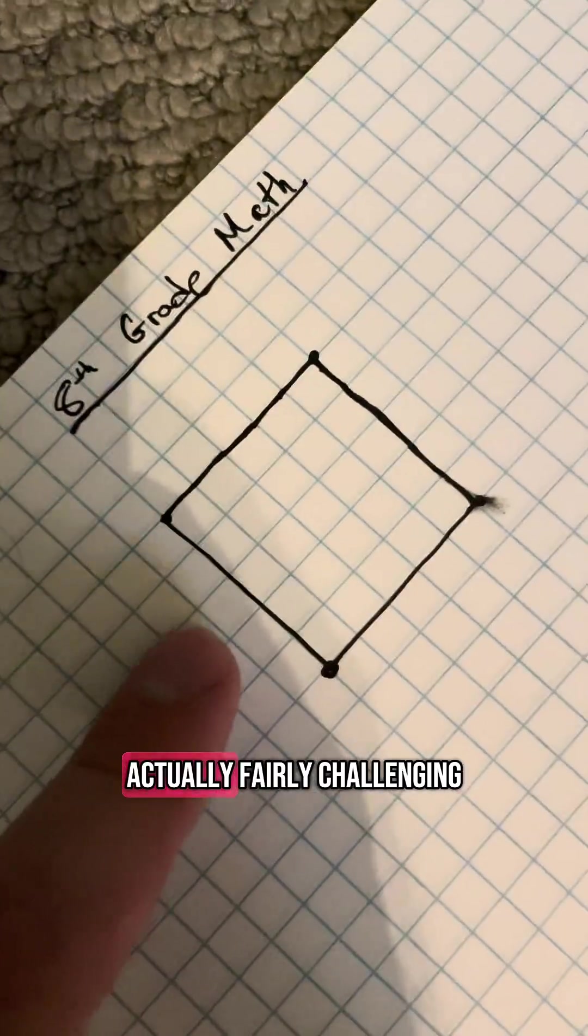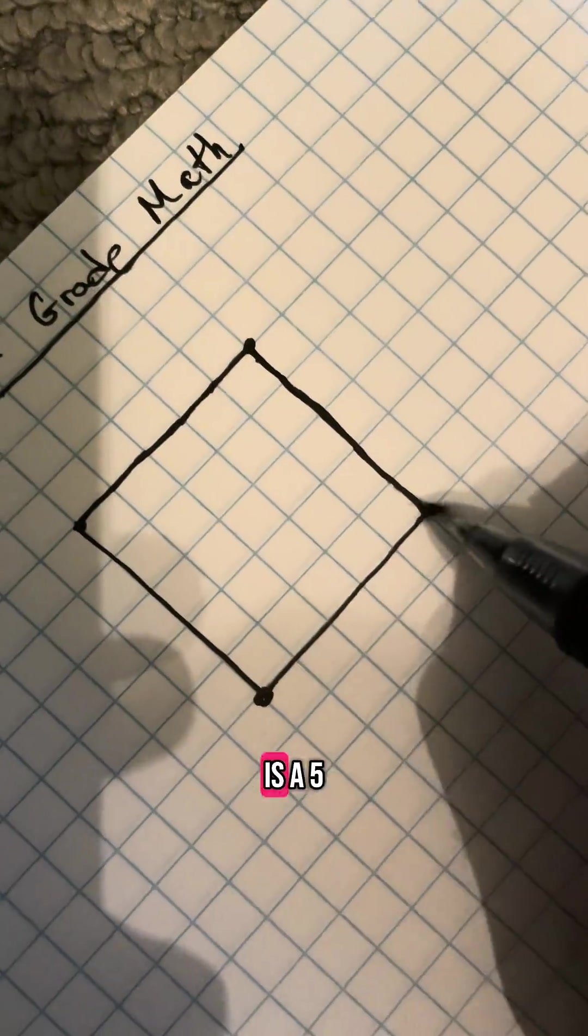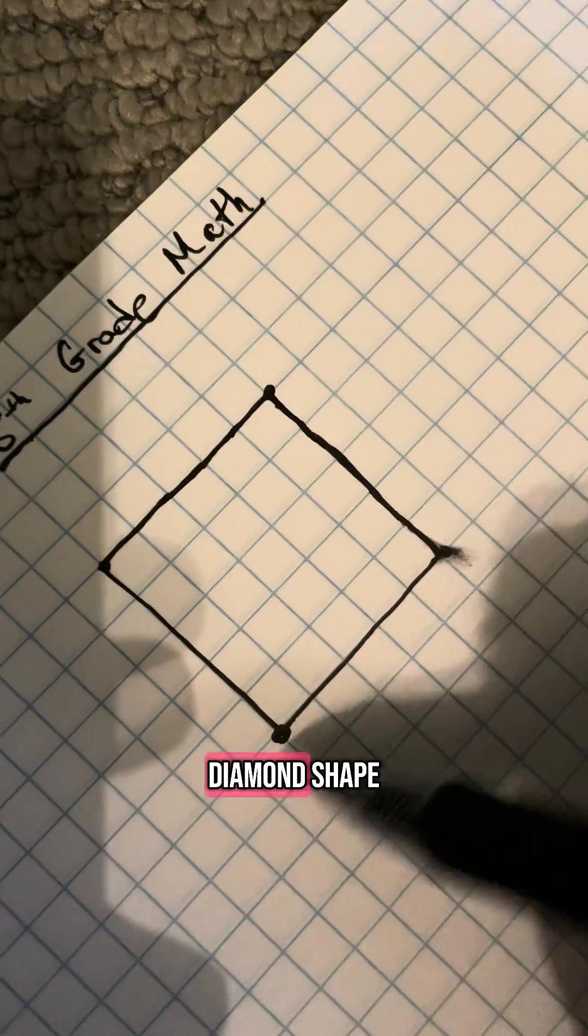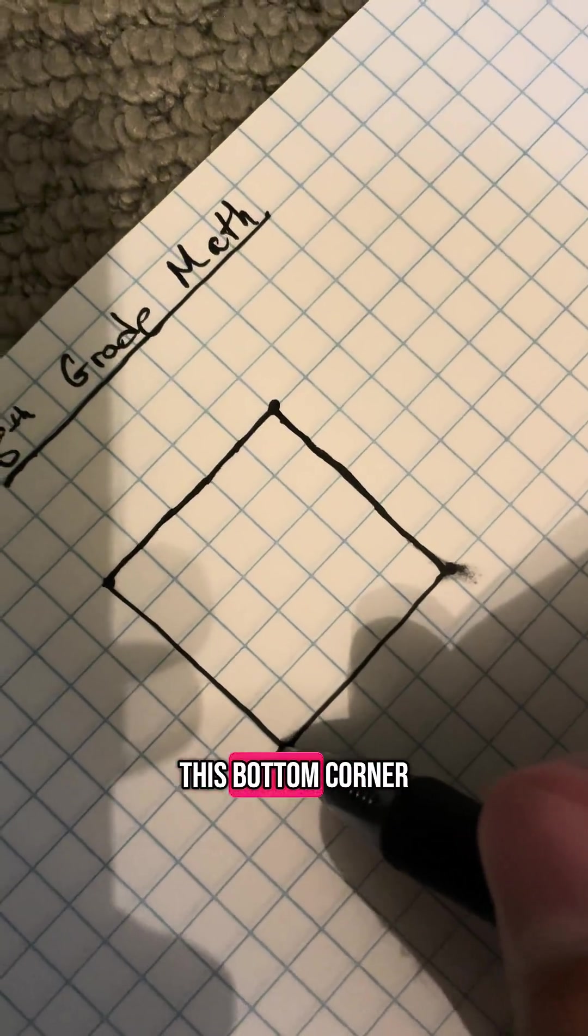this problem is actually fairly challenging. What we have is a five by five grid that's turned like this so that it is like a diamond shape. Now starting at this bottom corner right here,